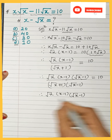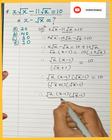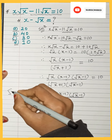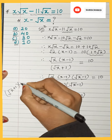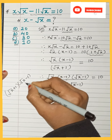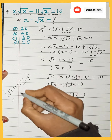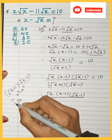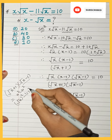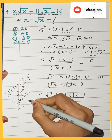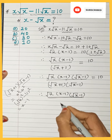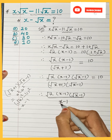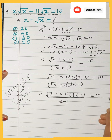Here we can see that (√x + 1)(√x − 1) is in the form (a + b)(a − b), where a = √x and b = 1. Using the identity a² − b², we get (√x)² − 1² = x − 1. So the denominator becomes x − 1, and this equals 10.